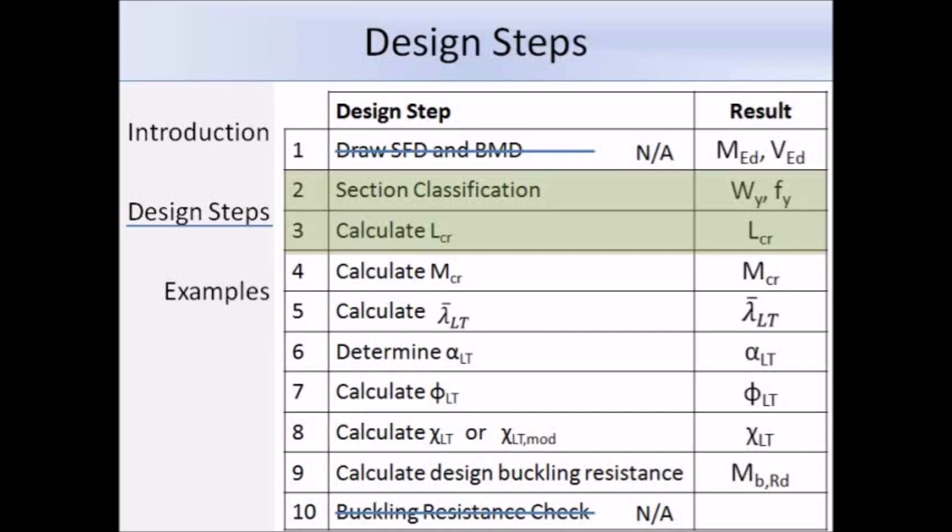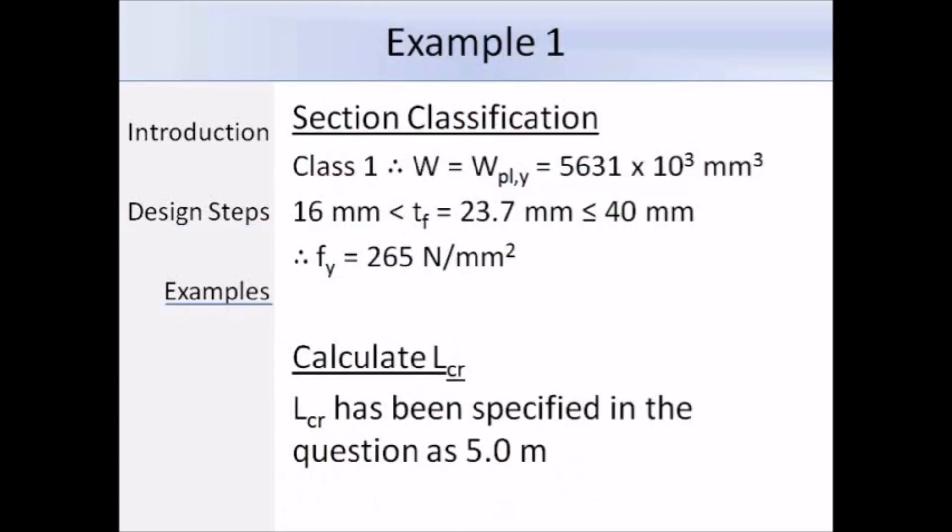First of all, we need to classify the section and determine LCR. I'm not going to go through all of the steps for the classification, but the answer you get is class 1, so that means that we need to use the plastic modulus Wply to work out the buckling resistance. And the flange thickness is 23.7 mm, so that's between 16 and 40 mm, so from the product standards, the yield strength is 265 N/mm². LCR is the distance between lateral restraints, and that was specified in the question as 5 m.